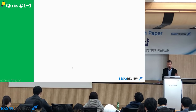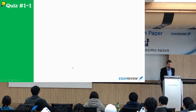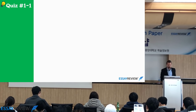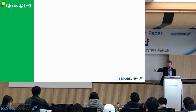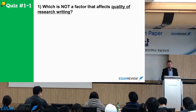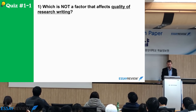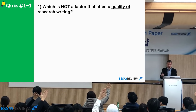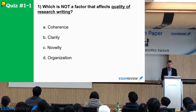Quiz: which one is not a factor that affects quality of research writing? A, coherence; B, clarity; C, novelty; D, organization. The answer is C, novelty. Novelty might affect your research — you want to do a study of something that hasn't been done before — but you don't want to write in a novel way. It's not a creative writing course; you want to follow the rules.